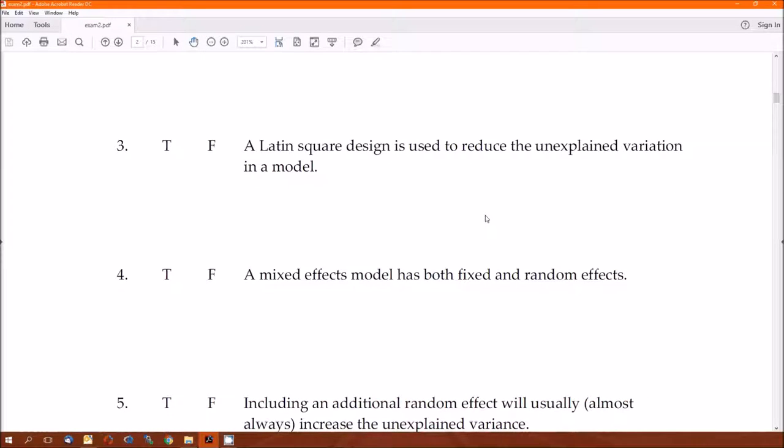Three, a Latin square design is used to reduce the unexplained variation in a model. That's false because you don't put any more variables in your model. A Latin square design is how you set up the experiment itself, not how you analyze it. The purpose of a Latin square design is to keep the geographical factors from confounding your effects.